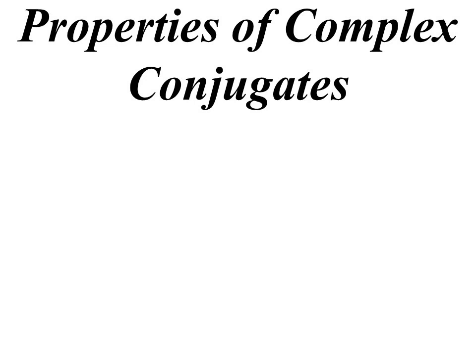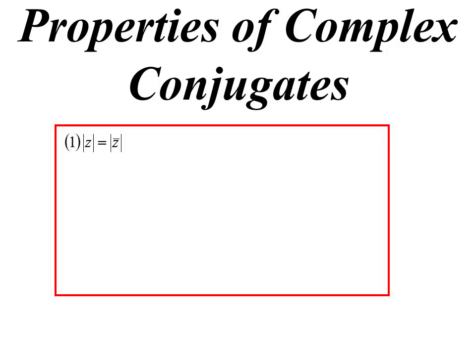We're going to look at the properties of conjugates, how we can play with conjugates. The modulus of a complex number must be the same as the modulus of its conjugate because they will be the same distance from the origin. Remember, one's just a reflection of the other in the axis.